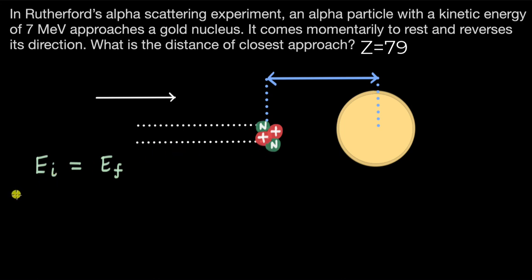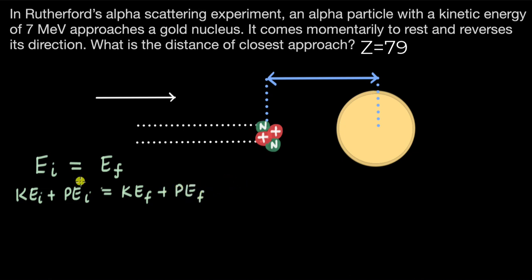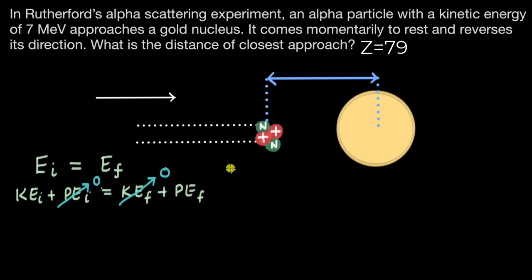The total initial energy is the sum of kinetic energy and potential energy, and the final energy is the sum of final kinetic energy and final potential energy. There is some initial kinetic energy, and we assume the initial potential energy is zero since there was no interaction between the alpha particle and the gold nucleus when they were far away. Finally, when the particle is at rest, it has no kinetic energy. So all the kinetic energy has been converted to potential energy of the system.